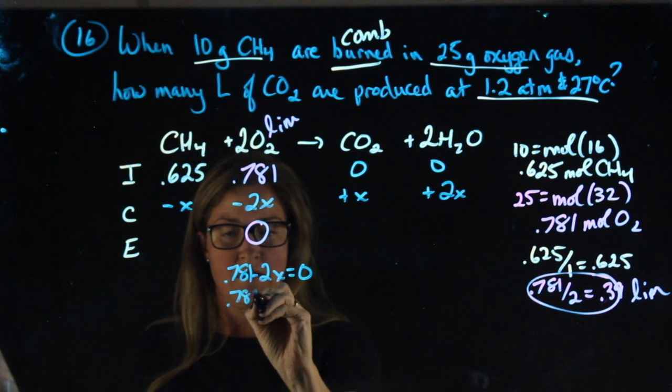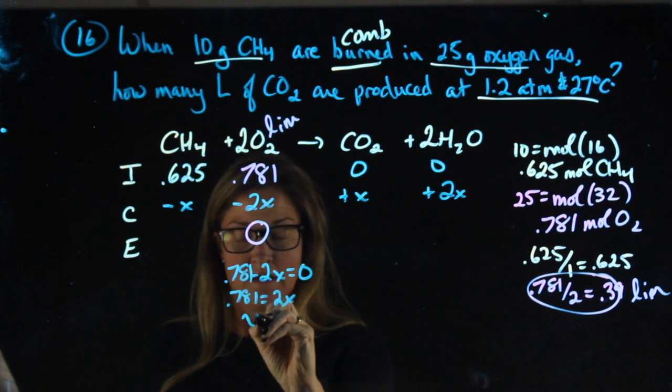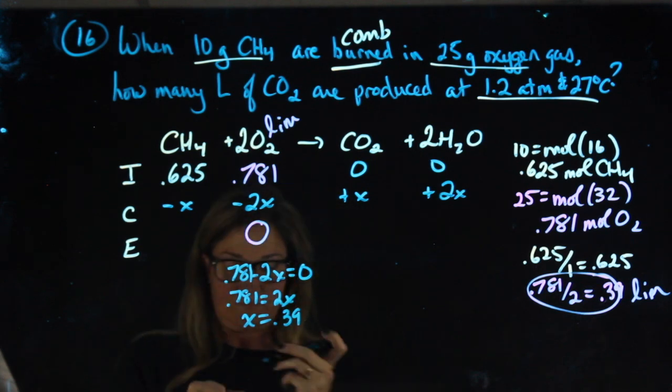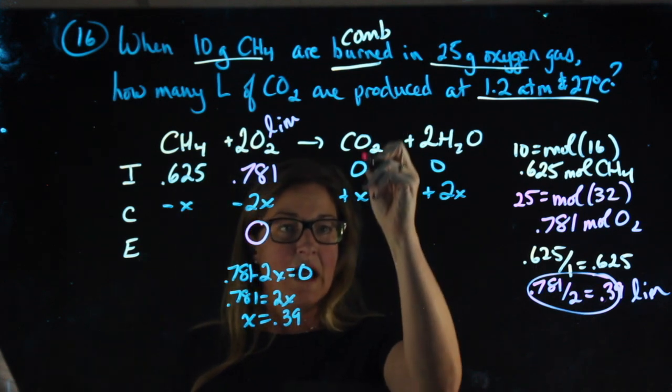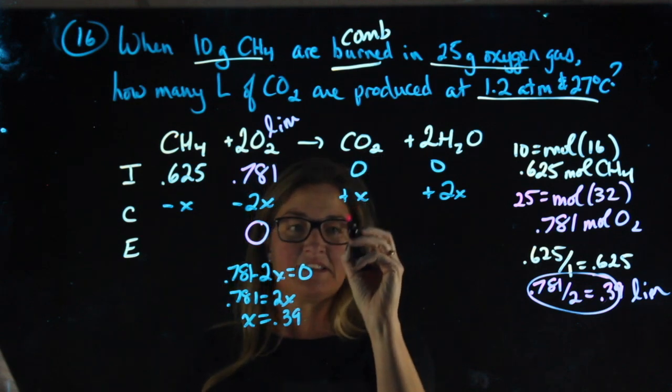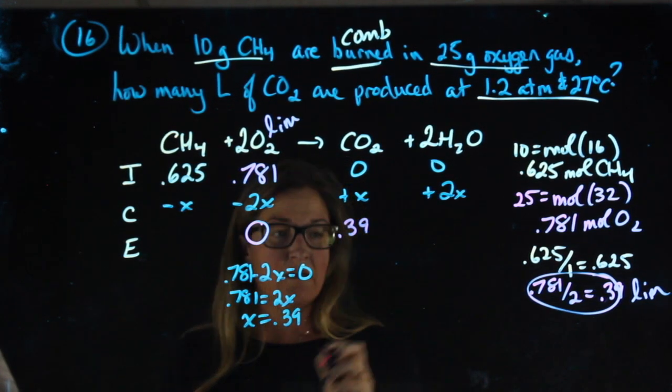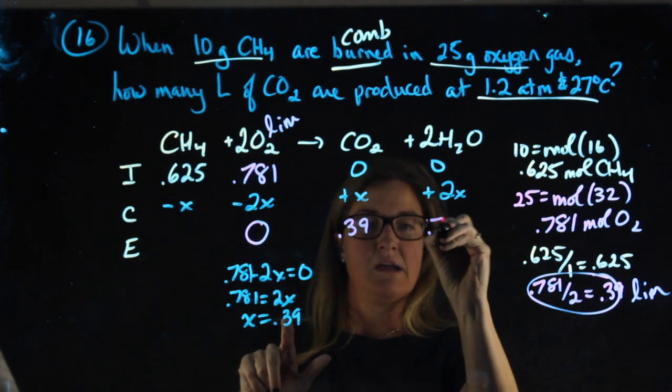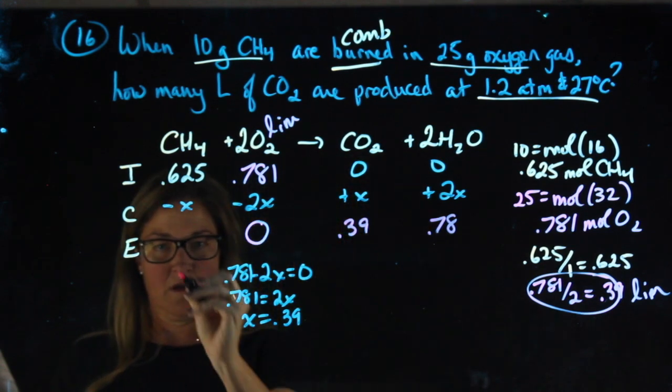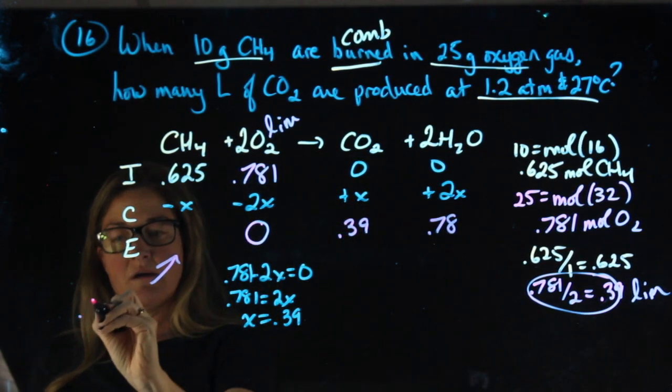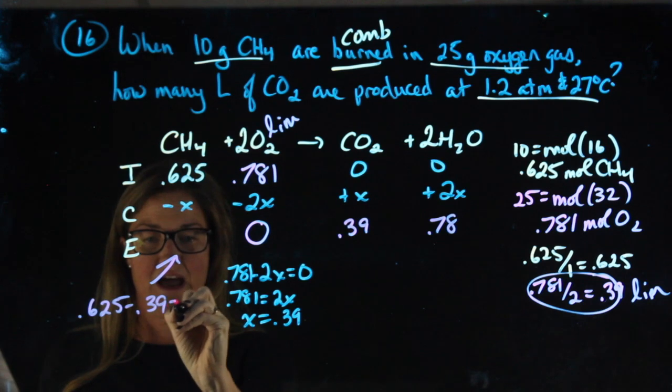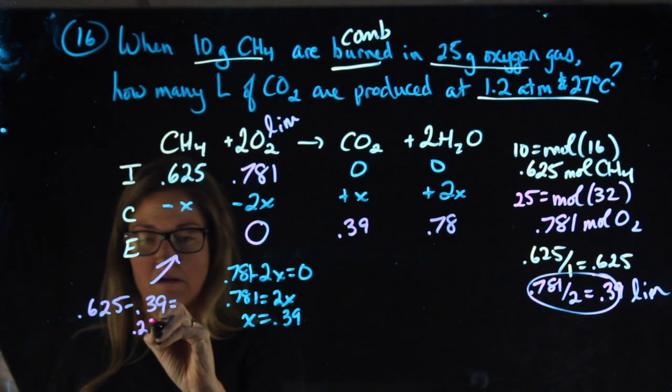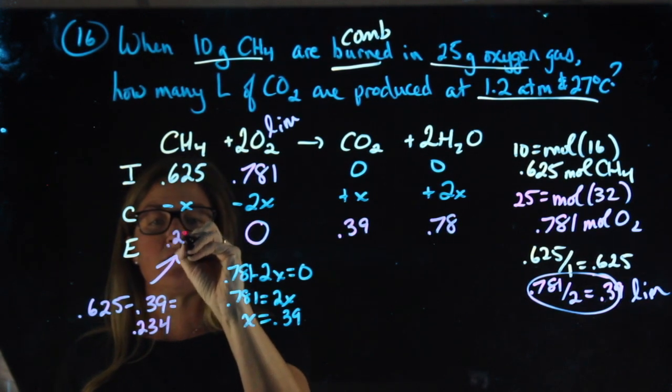0.781 equals 2x, x equals 0.39. Now that I have that, I can plug it in here. 0 plus x is 0.39. 0 plus 2 times 0.39 is 0.78. Over here, 0.625 minus 0.39 gives me 0.234 moles.